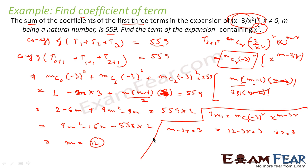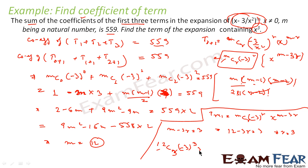With r = 3 and m = 12, the term becomes 12C3 · (-3)^3 · x^3. Since m - 3r = 12 - 9 = 3, this is indeed the x³ term. Solving 12C3 · (-3)³, we get the coefficient as -5940. So the term is -5940x³.